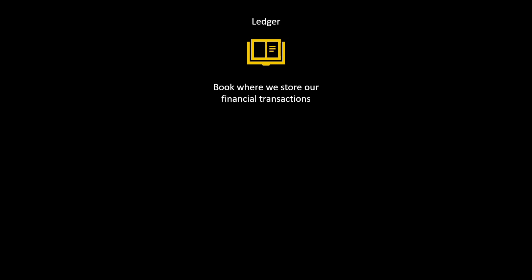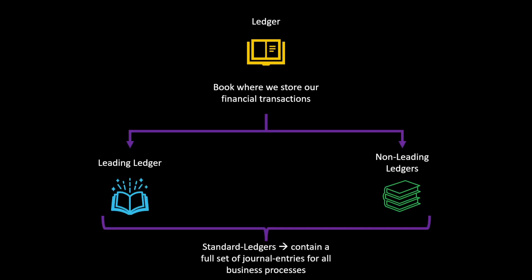You can imagine a ledger being a book where we can store our financial transactions according to the new general ledger accounting in SAP. In SAP S4HANA, we distinguish between the leading ledger and the non-leading ledgers. Both the leading and the non-leading ledgers are also called standard ledgers that contain a full set of journal entries for all of our business processes.